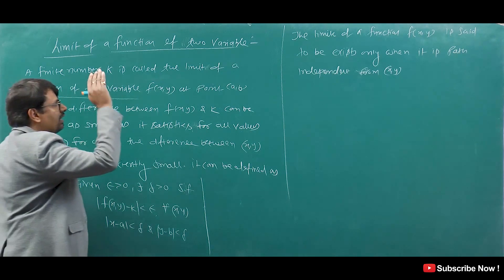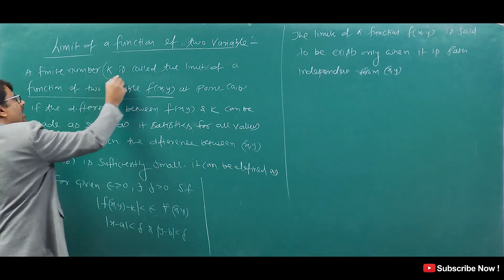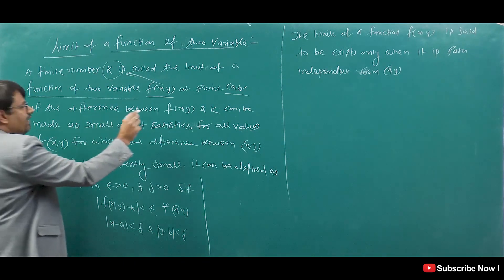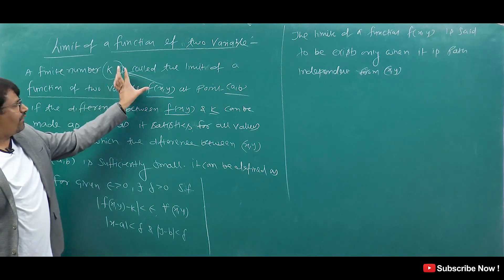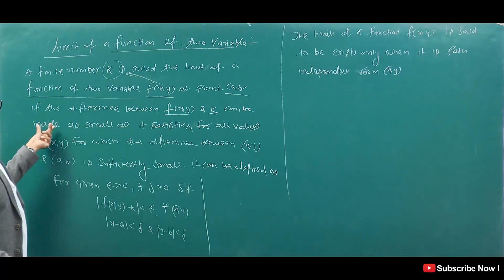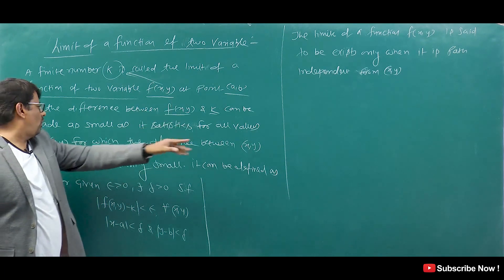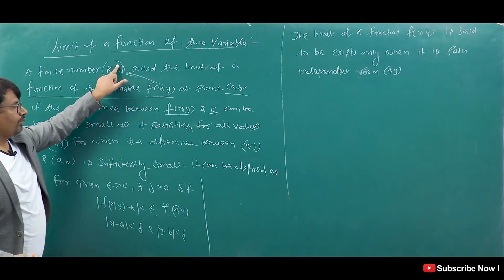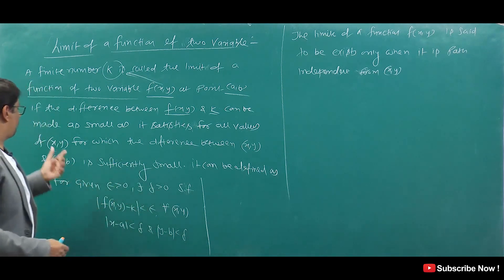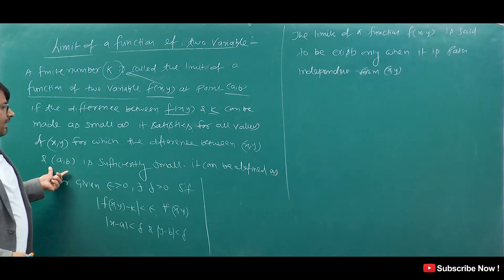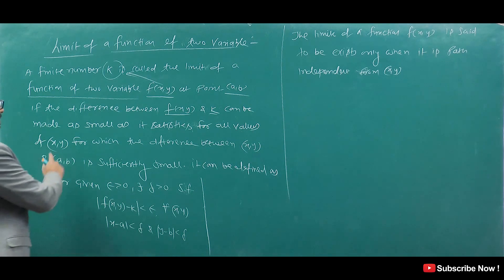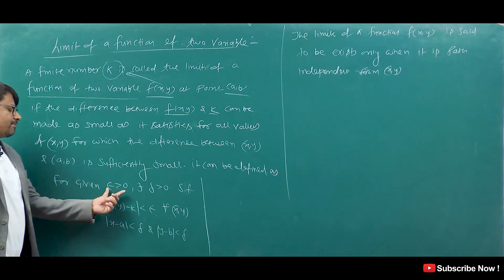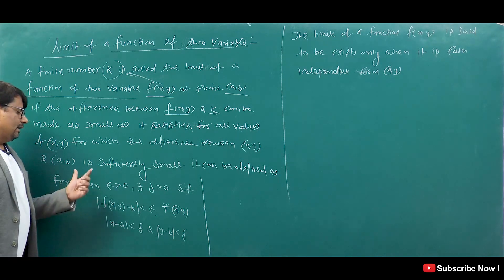A finite number k is called the limit of function of two variables f(x,y) at point (a,b), if the difference between f(x,y) and k is sufficiently small when the point (x,y) goes to (a,b). It can be defined as: for given epsilon, there exists a delta such that |f(x,y) − k| is small.